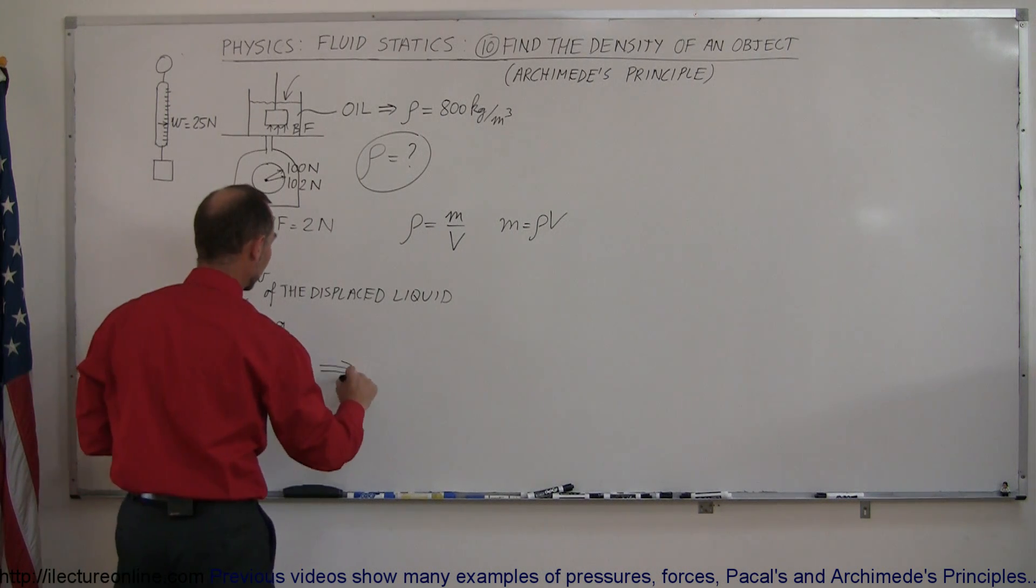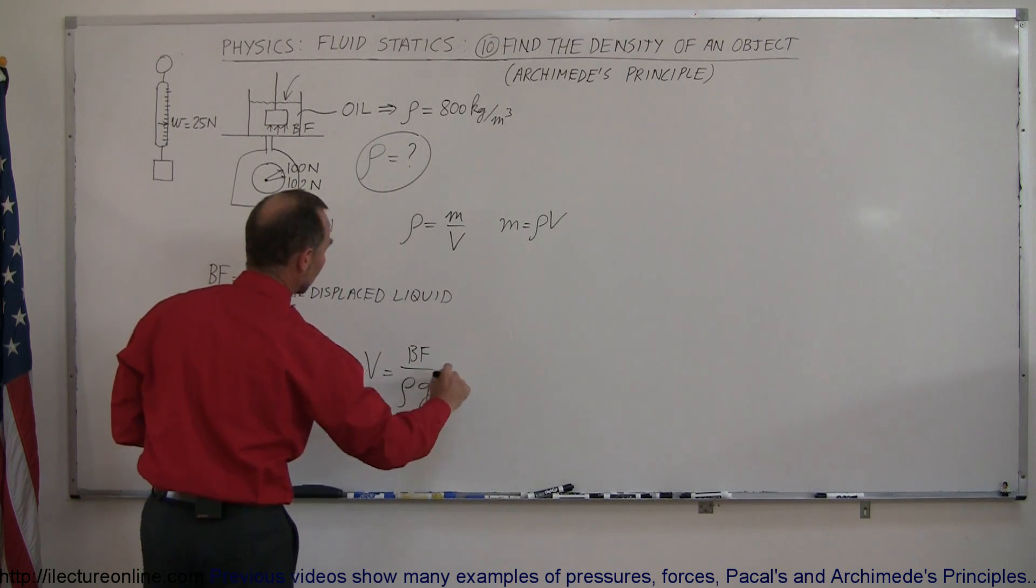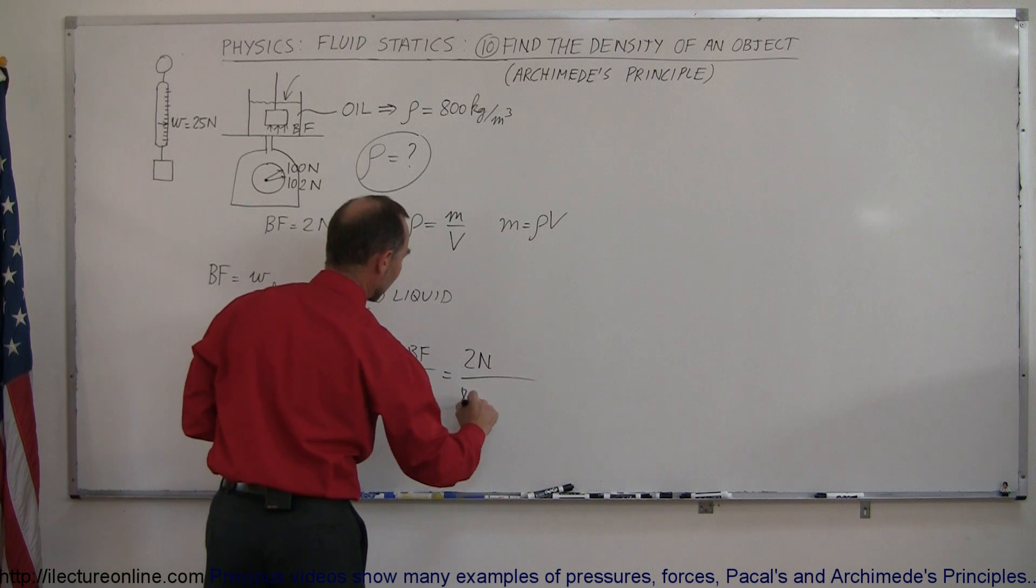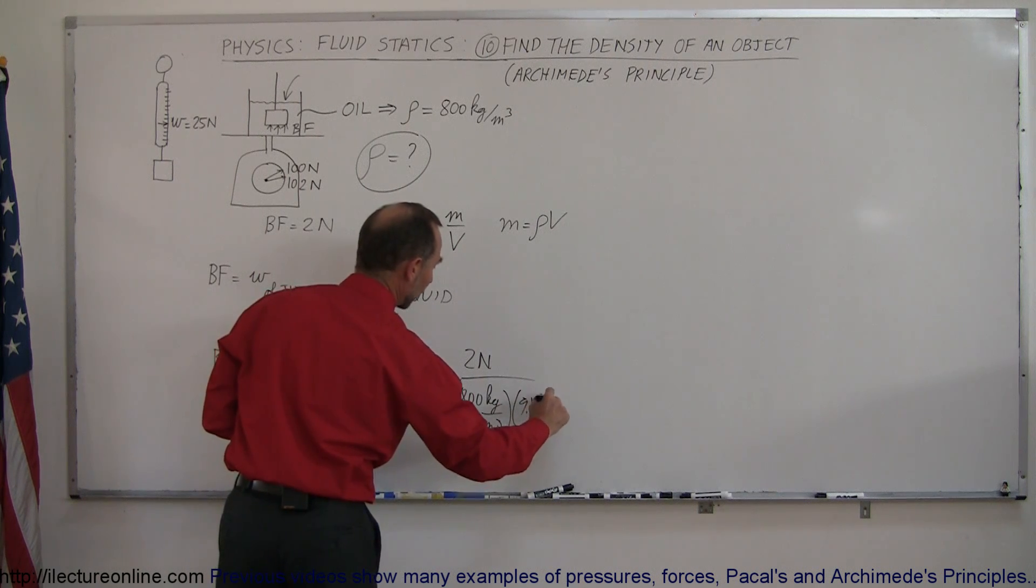So we're going to solve this equation for v, which is equal to the buoyancy force divided by the density times g. The buoyancy force is 2 newtons. The density of the liquid is 800 kilograms per cubic meters. The g is still 9.8 meters per second squared.